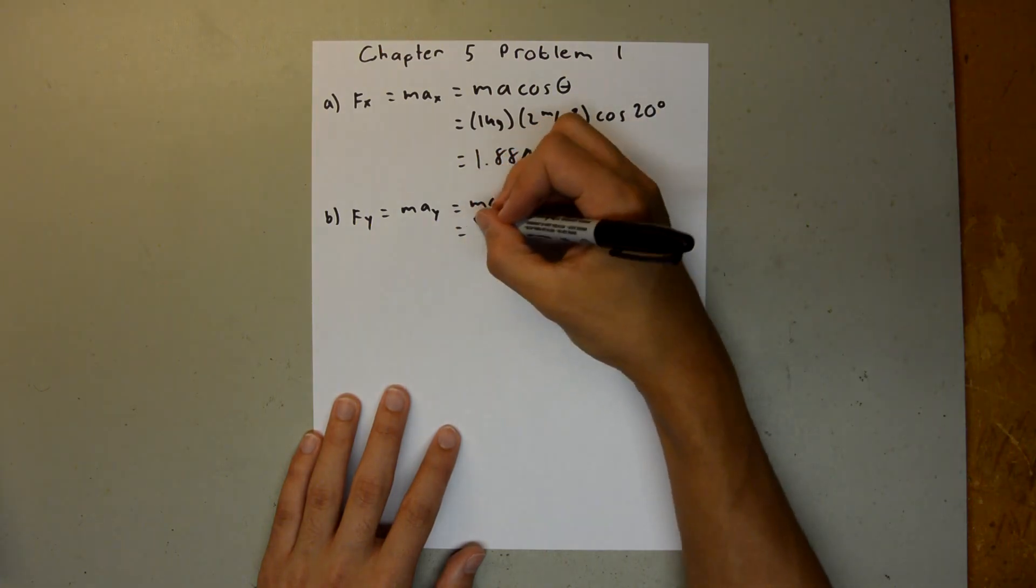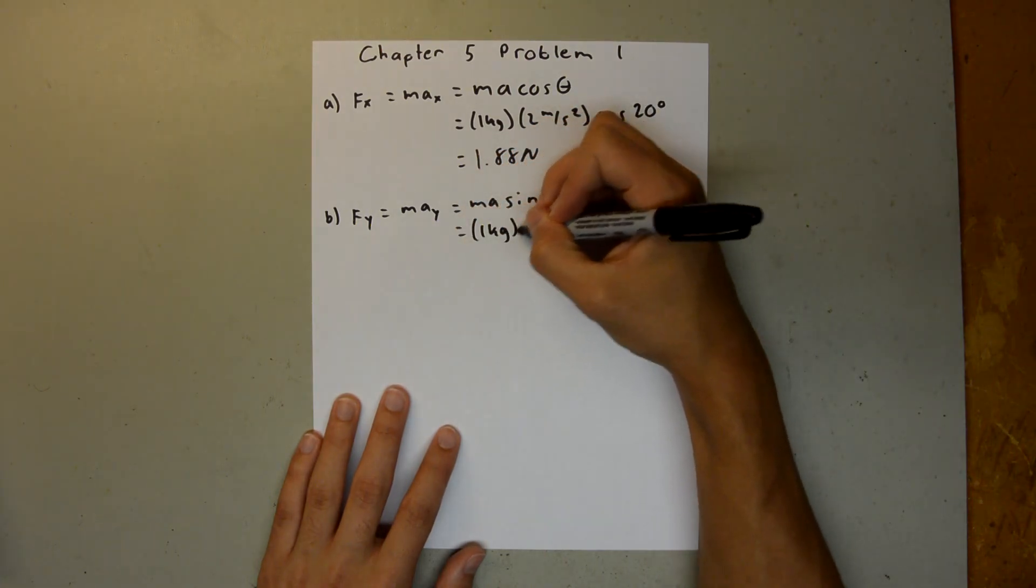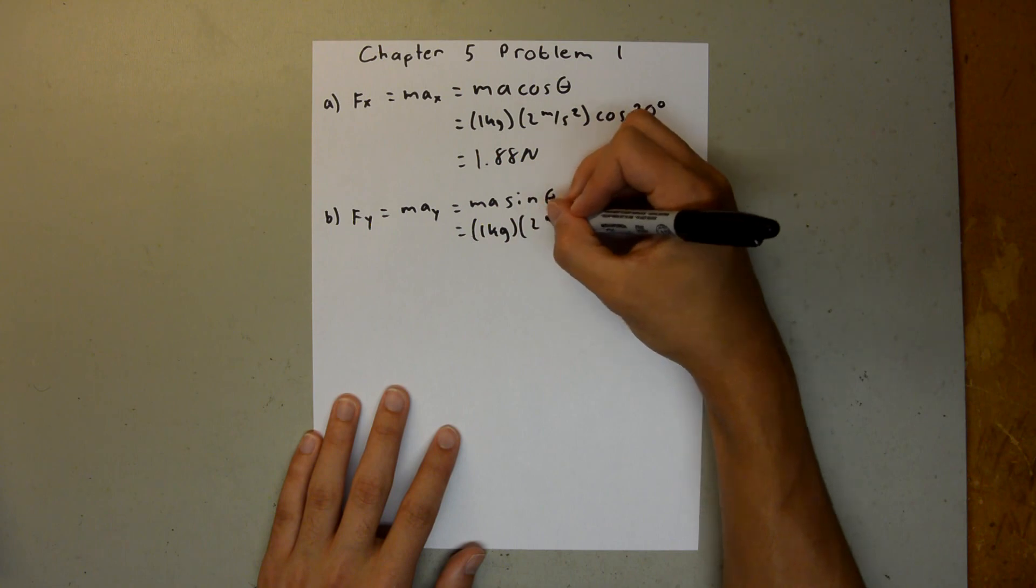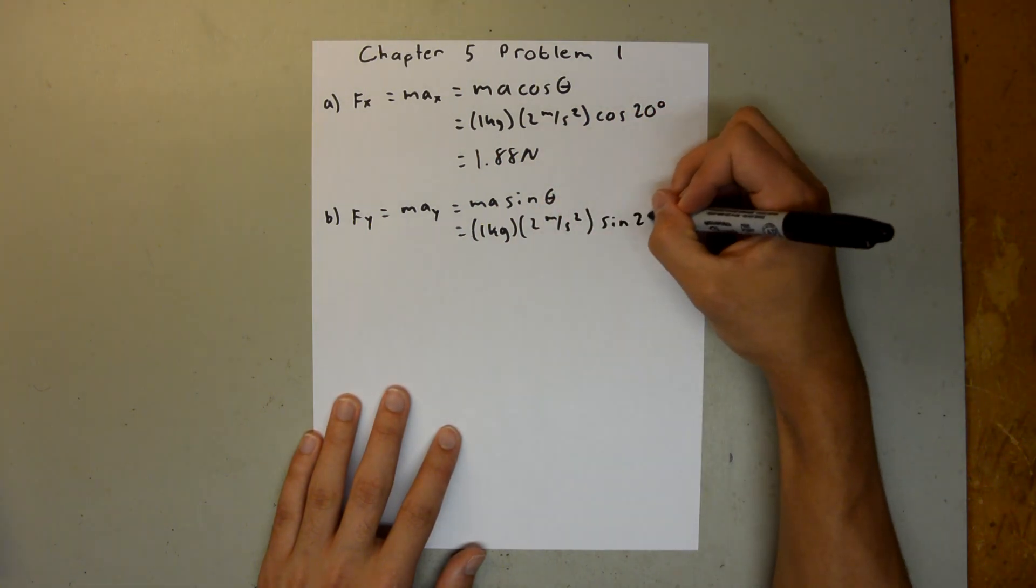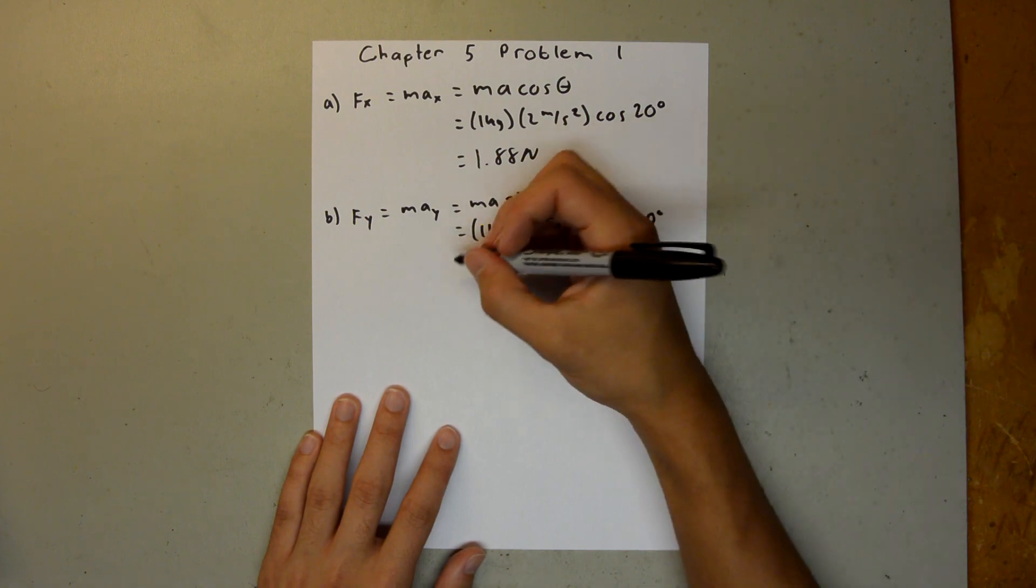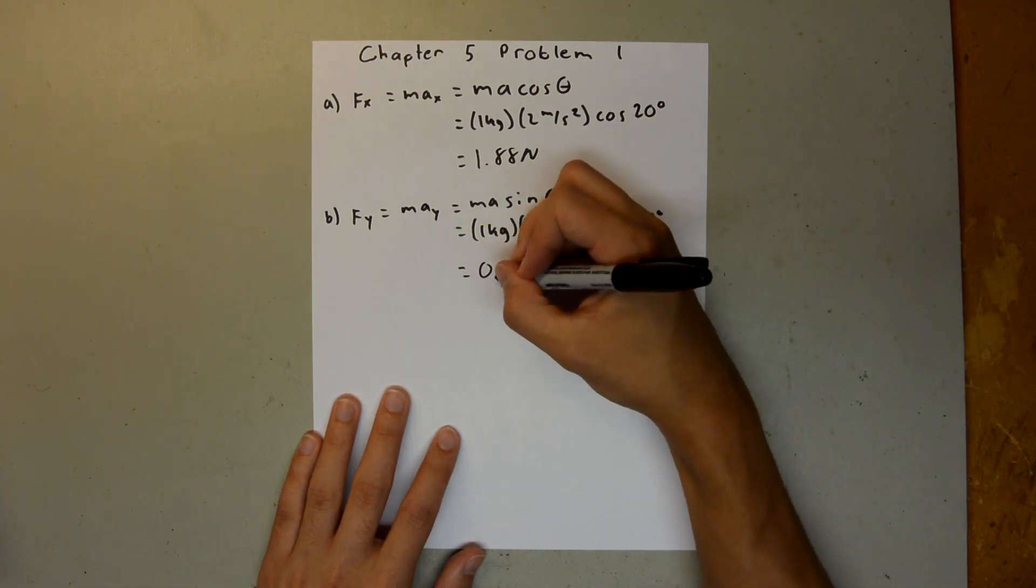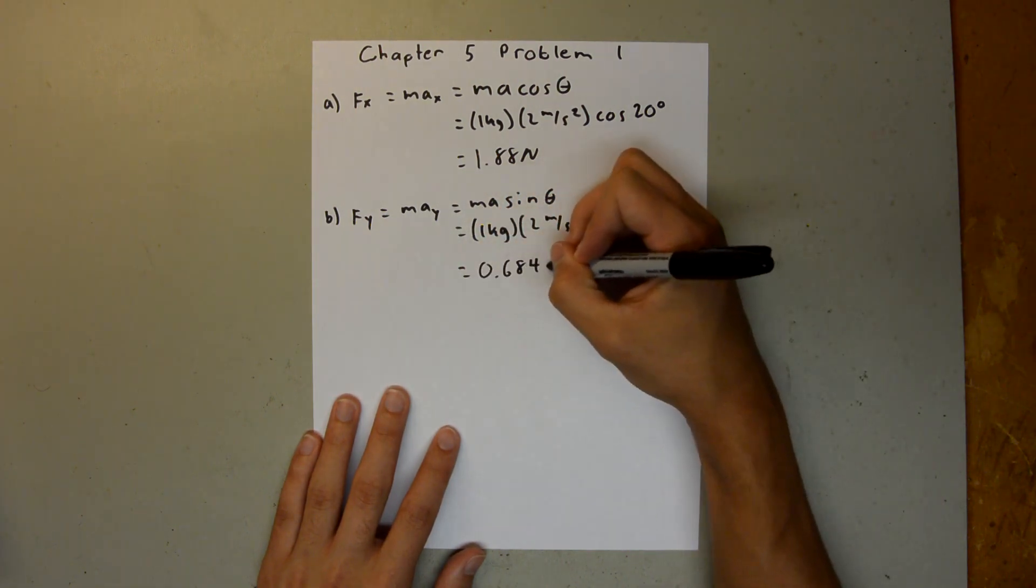That's going to be equal to 1 kilogram times 2 meters per second squared times the sine of 20 degrees. When you plug that into your calculator, you should get 0.684 newtons.